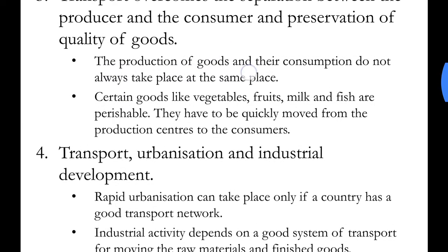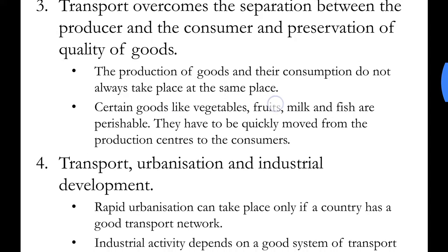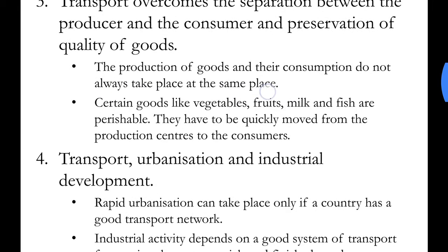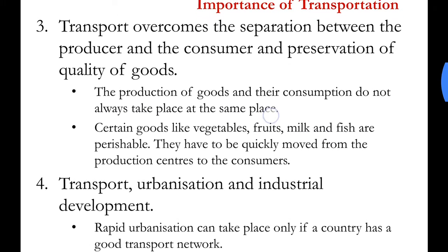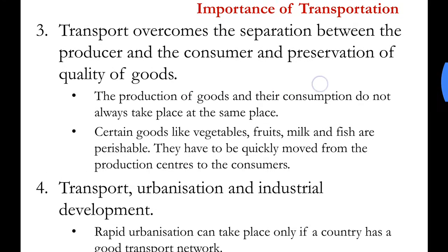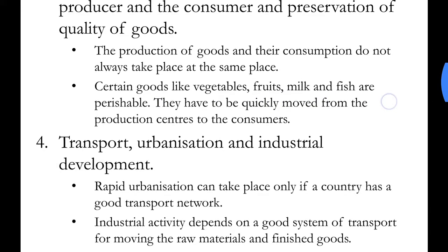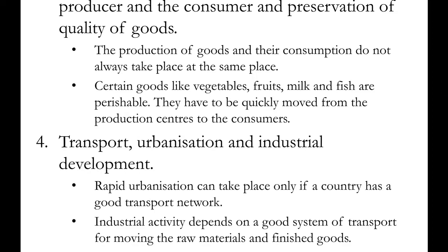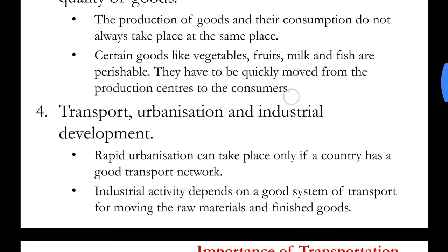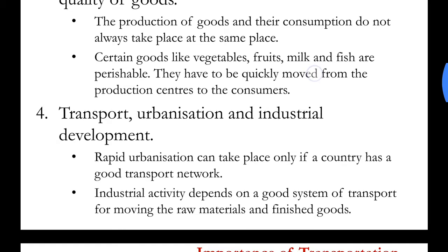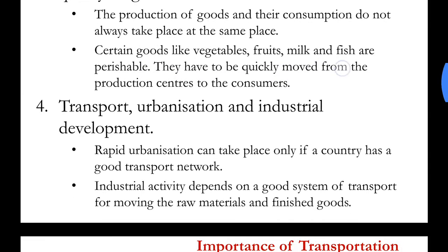The production of goods and their consumption do not always take place at the same location, hence we need transportation to transfer the goods from one place to another. Certain goods like vegetables, fruits, milk and fish are perishable — they deteriorate with time. Hence we need to quickly transport them from production centers to consumers, making an efficient and fast transport system essential in these areas.